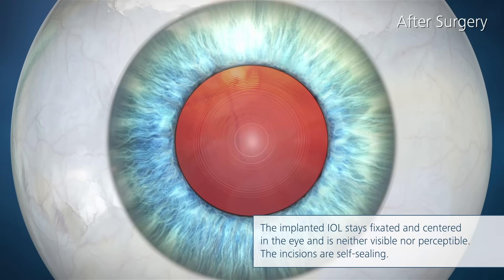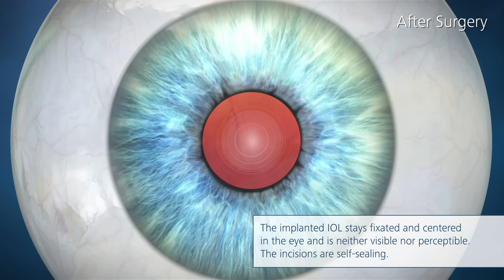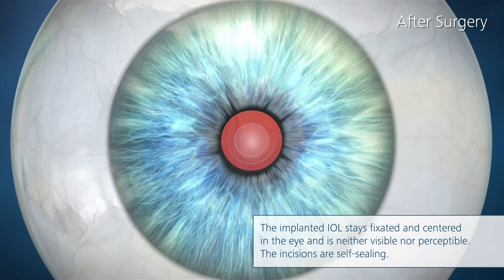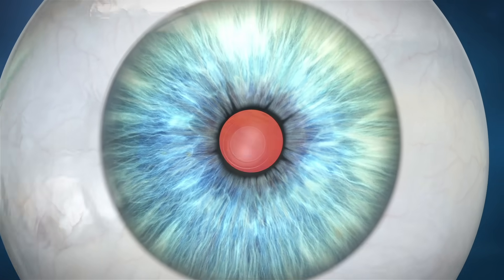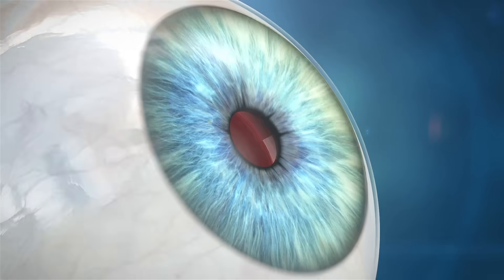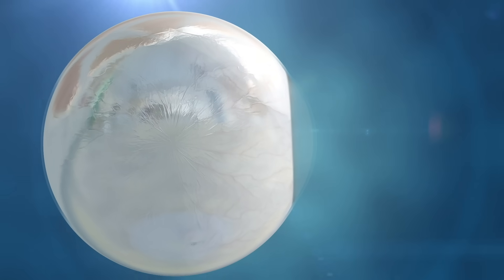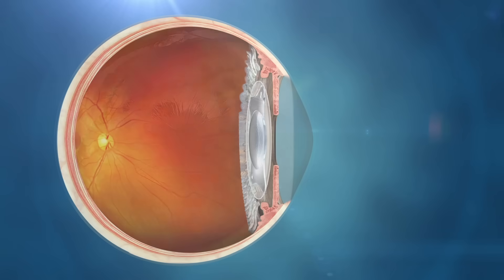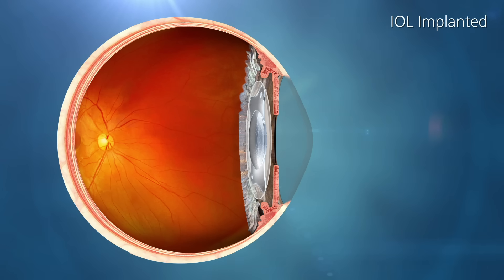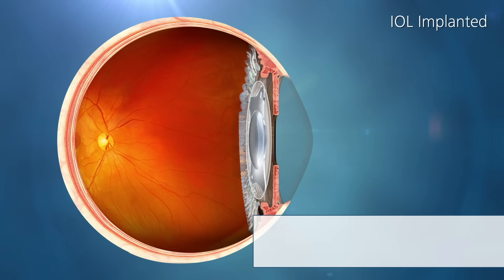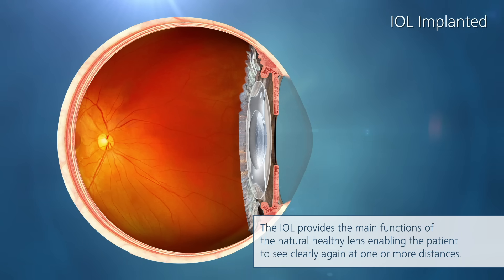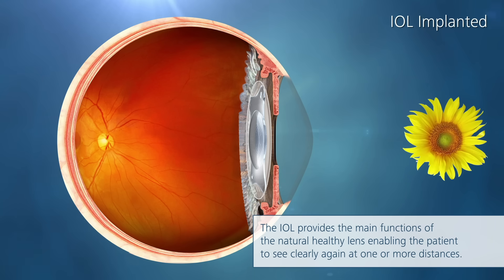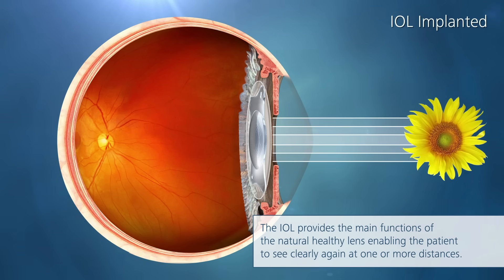The implanted intraocular lens stays fixated and centered in the eye and is neither visible nor perceptible. The incisions are self-sealing. The IOL provides the main functions of the natural healthy lens, enabling the patient to see clearly again at one or more distances.